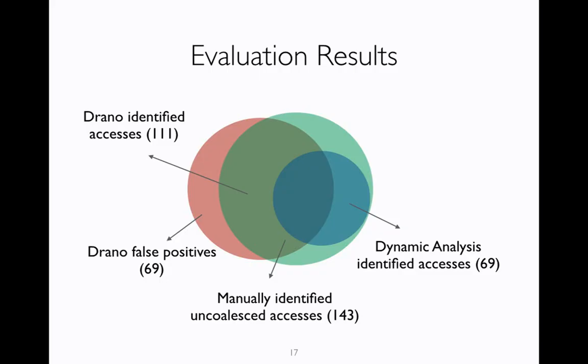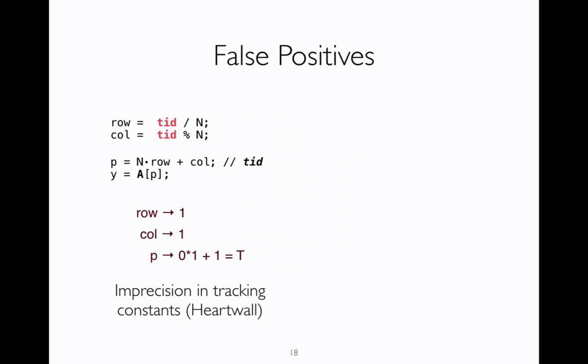Let's look at why Draeno reports false positives. This is one example from a benchmark hot wall, where the actual access in the program is coalesced. The reason is that TID is split into two variables, row and column, and then it is merged back to get the same value in P. So P corresponds to consecutive locations in consecutive threads, and therefore this access is coalesced. However, we don't track the fact that TID is being multiplied and divided by the same constant, and therefore we report this as uncoalesced. Similarly, we have imprecision in tracking arrays, and because of that, we report false positives.